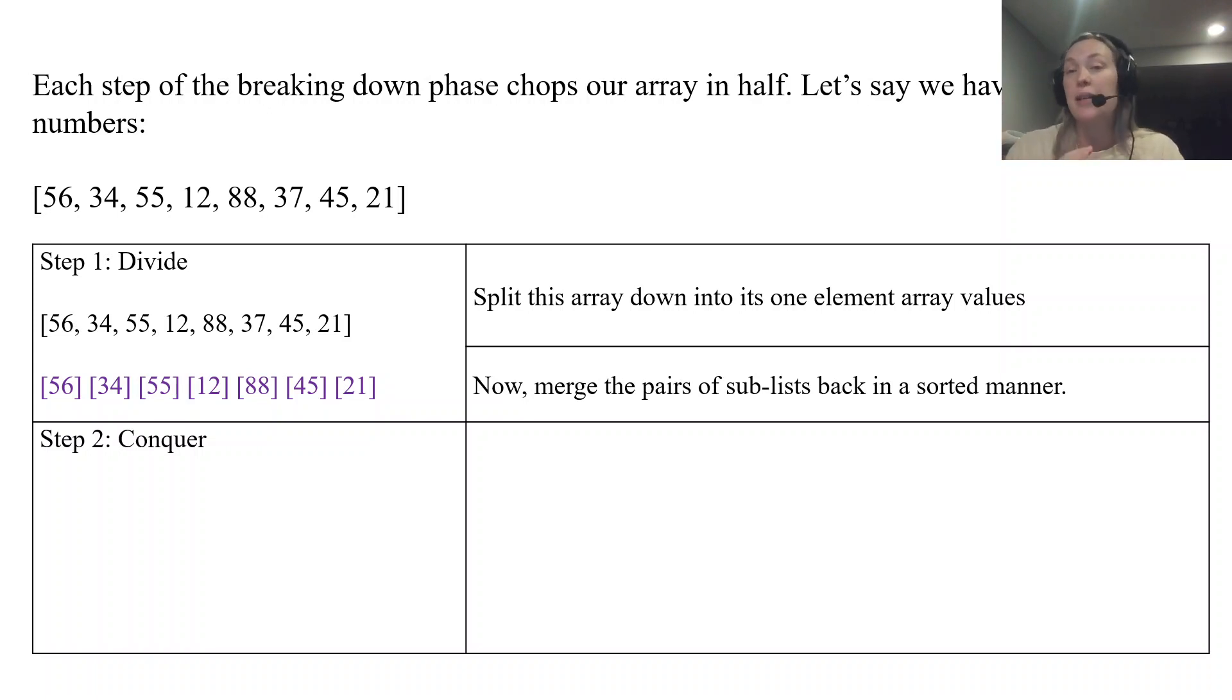Now it's going to merge the pairs of sub-lists back in a sorted manner. It's going to take two arrays side by side and merge those two arrays back together. The way it merges - you create a new array that can contain both elements, and it'll make sure that they are sorted together. So like 56 and 34, to merge those together 34 would go first and then 56.